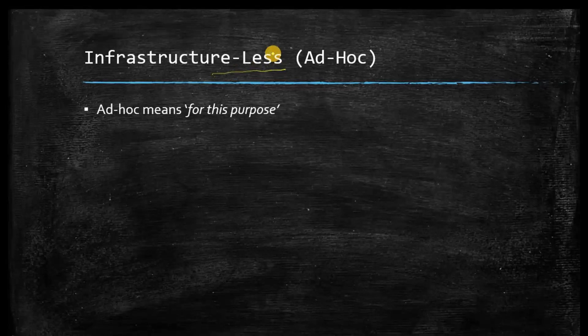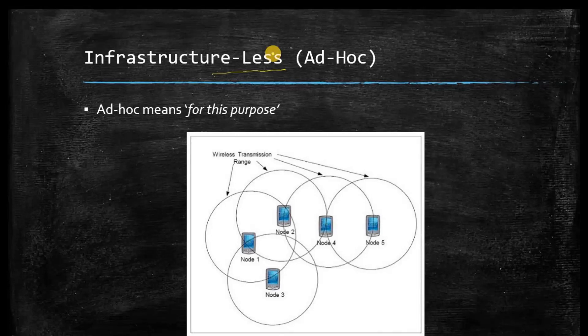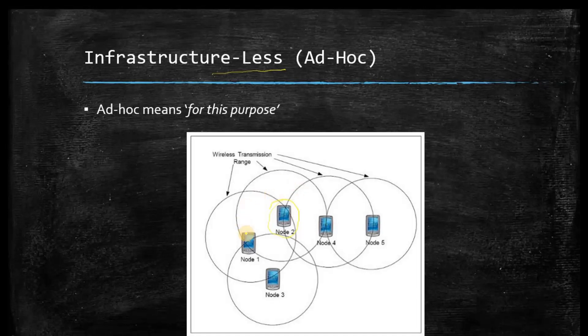The next kind of wireless network is the infrastructure-less wireless network. In infrastructure-less networks there is no central access point; rather, all the nodes inside the network act as routers themselves. Every node establishes routing information inside it and is responsible for finding the routing path. Every device acts as a router, and this kind of network where there is no central access point is called the ad-hoc network.